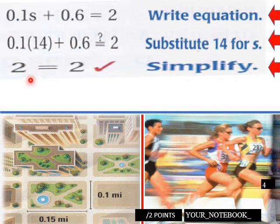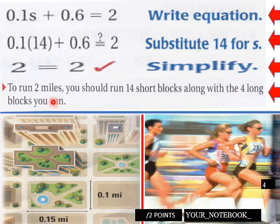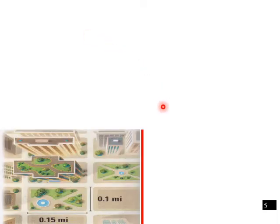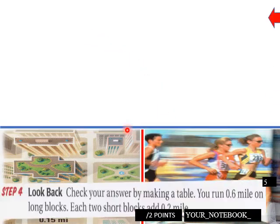Well, it does. 2 equals 2 here. 0.1 times 14 is 1.4 plus 0.6 equals 2. So it does work out. So to run 2 miles, you should run 14 short blocks along with the 4 long blocks when you run.